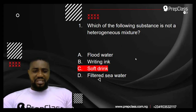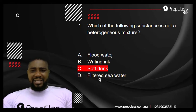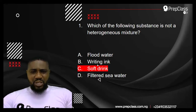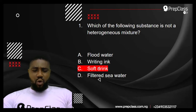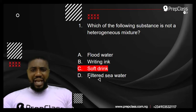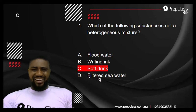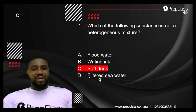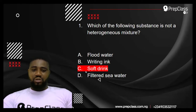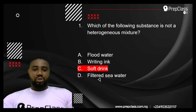Now with what I have explained, you can answer the question. Flood water can still contain particles of sand, silts, and clay — so that is heterogeneous. Writing ink — you can still see the particles. Soft drink like cola — it is not completely clear. But filtered sea water: sea water is just salty, and if you filter it to remove all the particles of sand, silt, and clay, the water will be crystal clear — though still salty. So the best answer is option D, which is filtered sea water.